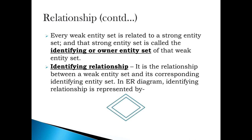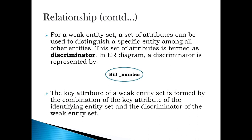Every Weak Entity Set is related to a Strong Entity Set. The Strong Entity Set is said to be the Identifying or Owner Entity Set with respect to the Weak Entity Set it is related to, and the Weak Entity Set is said to be existence dependent on the Identifying Entity Set. The relationship between a Weak Entity Set and its corresponding Identifying Entity Set is called an Identifying Relationship. For a Weak Entity Set, a set of attributes used to distinguish a specific entity is called a Discriminator or Partial Key. The Key Attribute of a Weak Entity Set is formed by the combination of the Key Attribute of the Identifying Entity Set and the Discriminator of the Weak Entity Set.